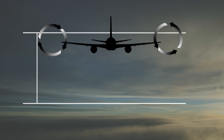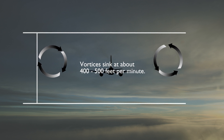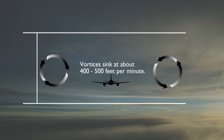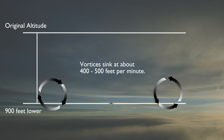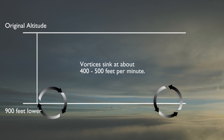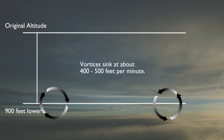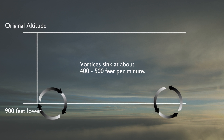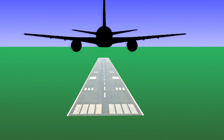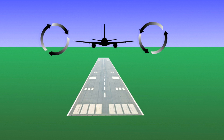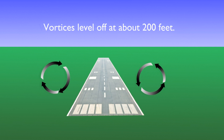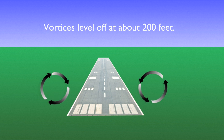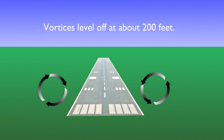Wingtip vortices tend to sink at about 400–500 feet per minute, slowing their rate of descent over time. They tend to level off about 900 feet below the altitude at which they were produced, and then dissipate over time. If they are generated near the ground, they will usually stop descending within 200 feet of the ground and then begin to move apart from each other until they dissipate.